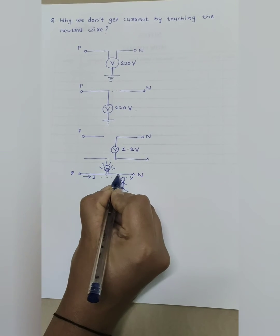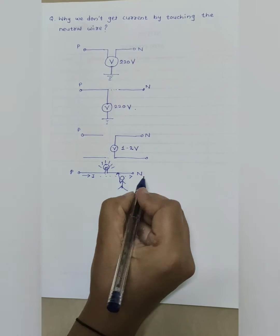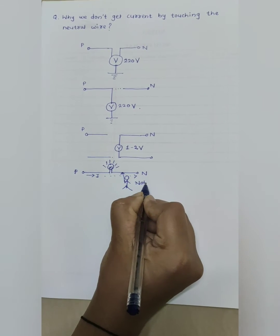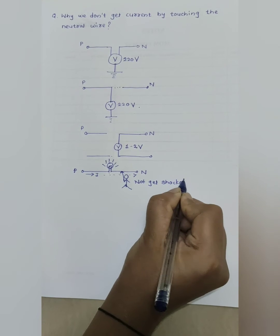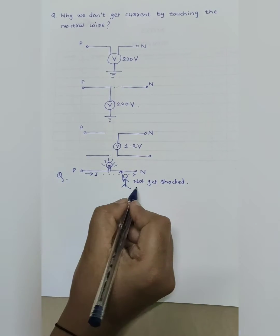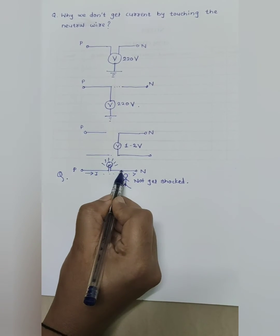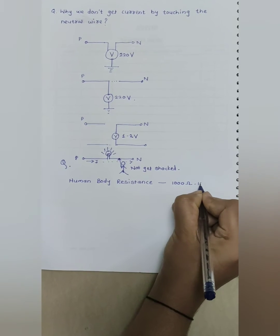If any person touches the neutral wire, then he will not get an electric shock. If he touches phase wire, then he gets shock. Then the question arises why. Human body resistance is 1000 ohm to 10,000 ohm.